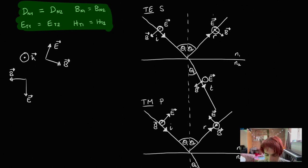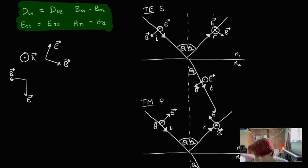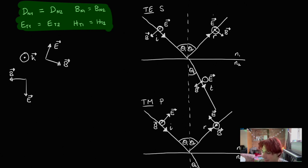We actually have two different cases, and this gives rise to two different sets of Fresnel equations, with two of the four equations corresponding to TE light and the other two equations corresponding to TM light. First, we are going to do the derivation for TE light, and then we are going to repeat the same derivation for TM light.